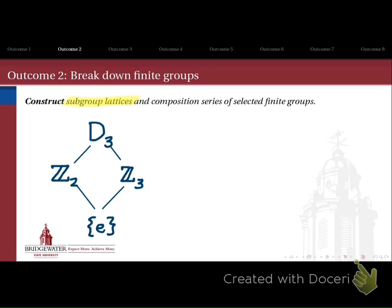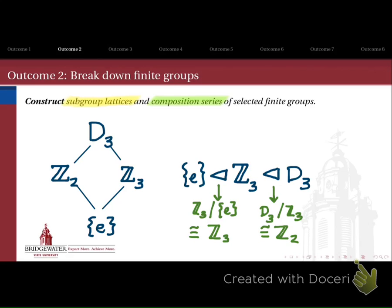The second way — and this will be even more useful going into the latter part of our course — is to look at the composition series of a group. This pays attention specifically to the normal subgroups. Inside D3, there is a unique non-trivial normal subgroup, Z3. When we take the quotient D3 by Z3, we get something isomorphic to Z mod 2, and the quotient of Z mod 3 by the identity gives Z mod 3. The big result here is the Jordan-Hölder theorem, which tells us that the composition series attached to a group is unique in some sense.